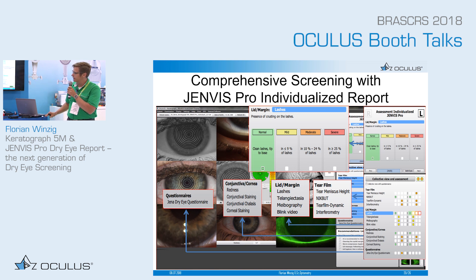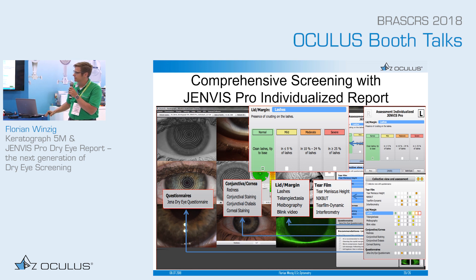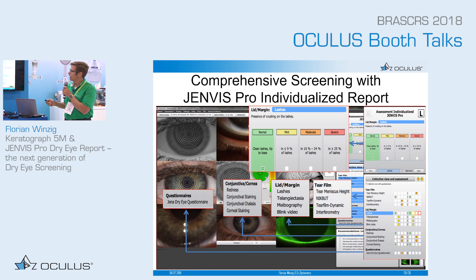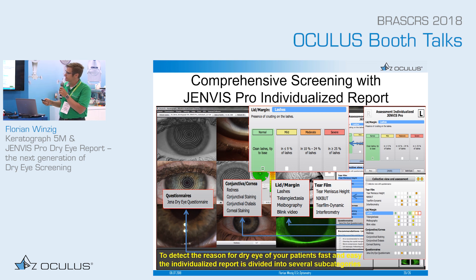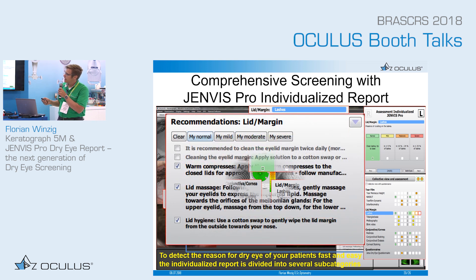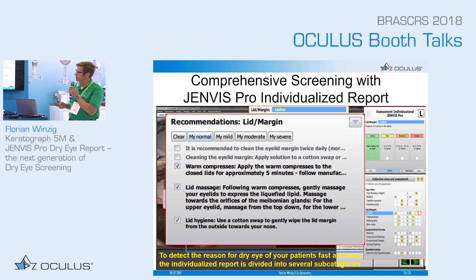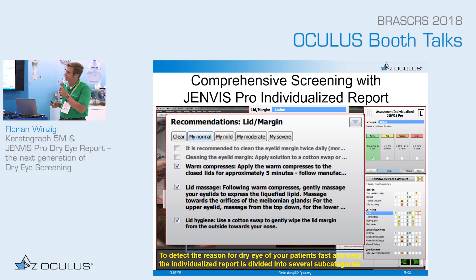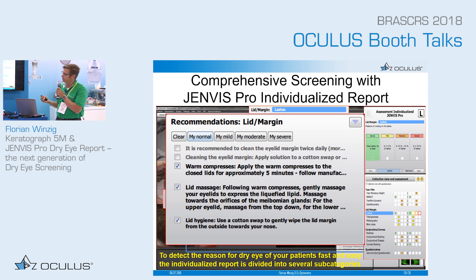The third subcategory covers conjunctival and corneal findings, mainly conjunctival and corneal staining and redness. The fourth covers subjective symptoms recorded in the dry eye questionnaire. Once assessment across all subcategories is complete, the recommendation field appears, allowing you to activate treatments or advice for the patient's dry eye condition with a simple click.